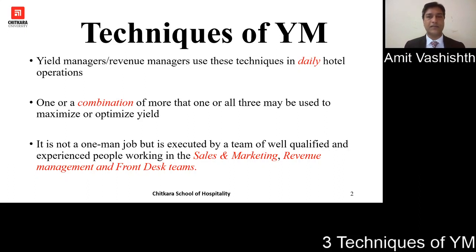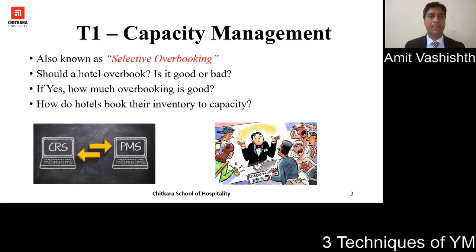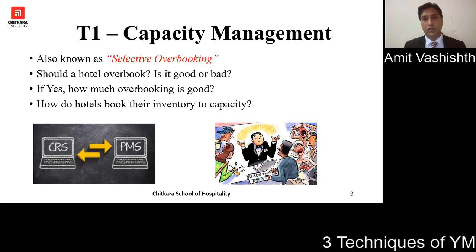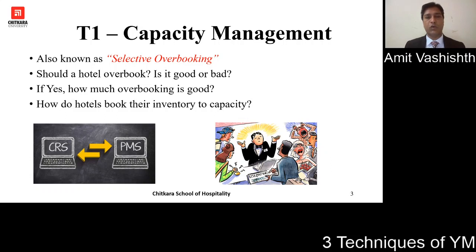Technique number one is capacity management, which in simpler terms is also referred to as selective overbooking. There are three questions: should a hotel overbook — is it good or bad? If yes, how much overbooking is good? And last, how do hotels book their inventory to capacity?